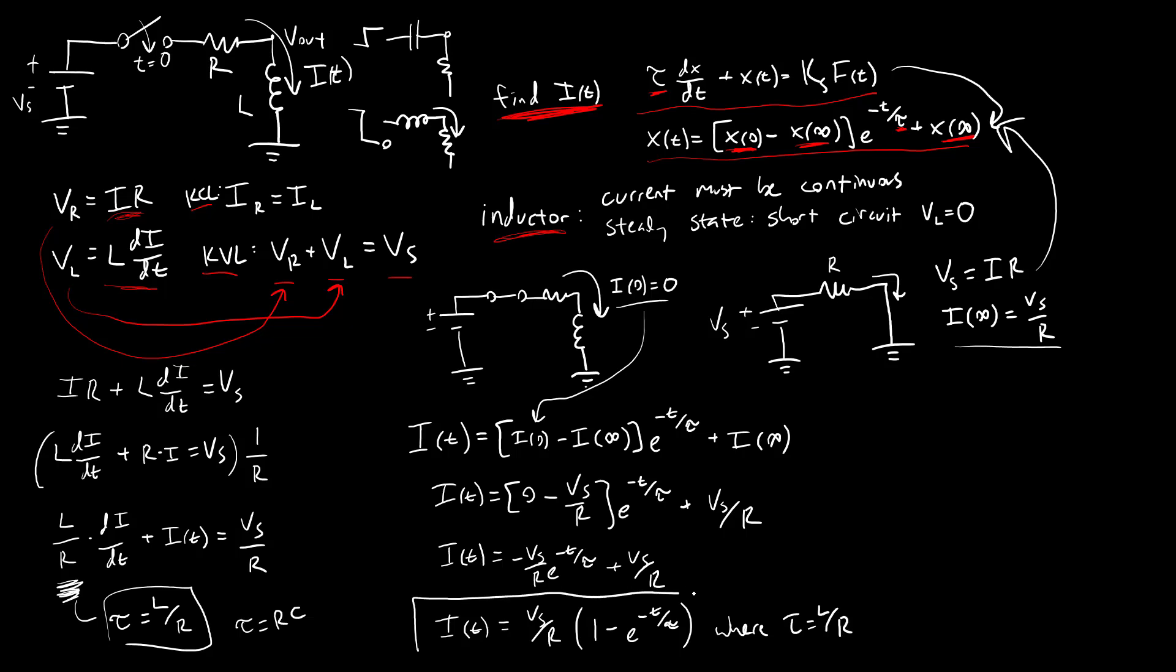There is our equation as we originally asked for, for the current as a function of time. If we were to graph that just like we did for the RC circuit with I on the y axis and time on the x axis, we would see that it's going to start out at our initial condition of I equals zero.